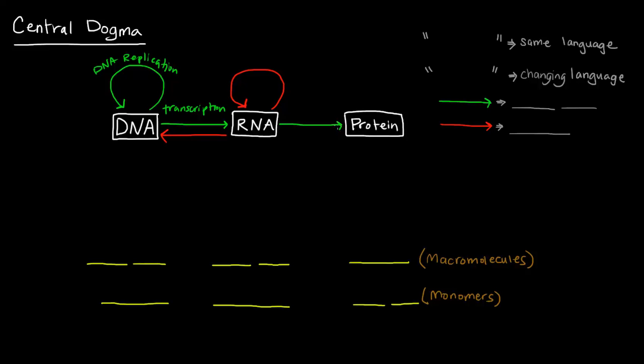And RNA can be converted into protein via a process called translation. So all of these green arrows here indicate the idea that is the central dogma. That is the central dogma, the sort of crazy big rule.